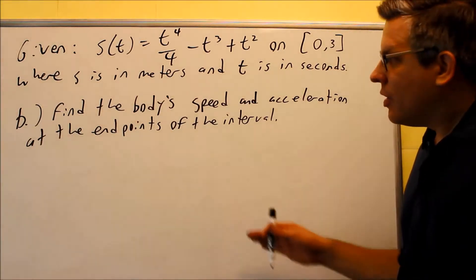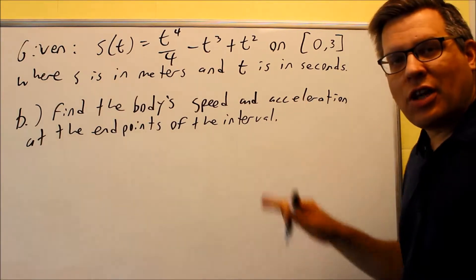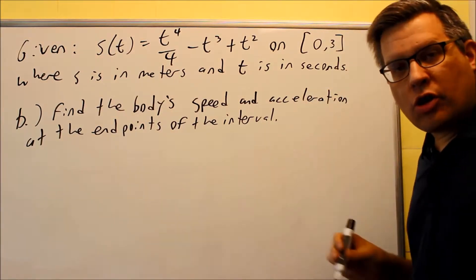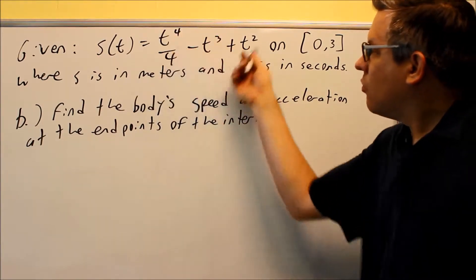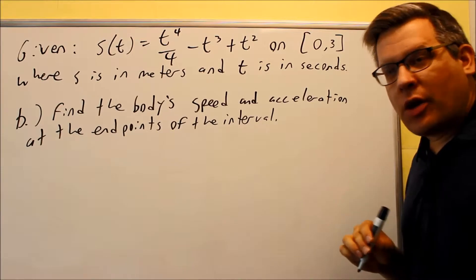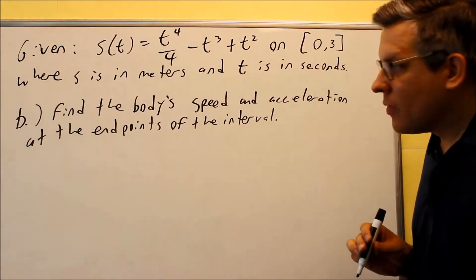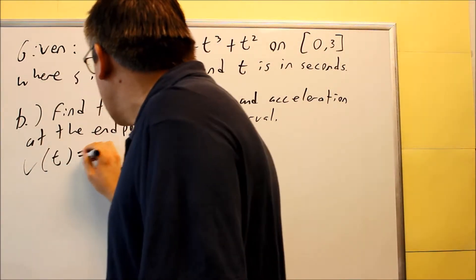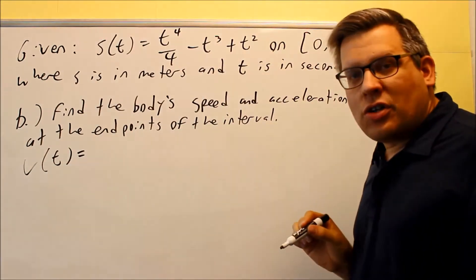For part B, we want to find the body's speed and acceleration at the endpoints of the interval. What we're going to do is find the velocity and acceleration functions by working with the position function, and then evaluate at zero and at three. First, let's find the velocity. The velocity function is going to be the derivative of the position function.